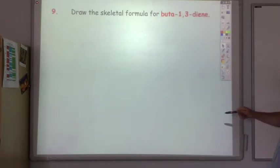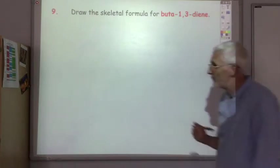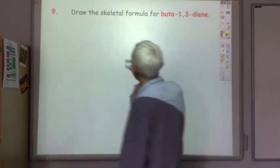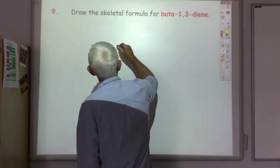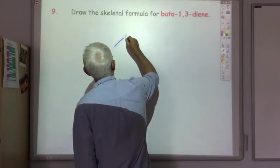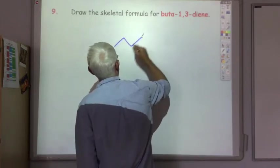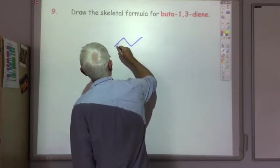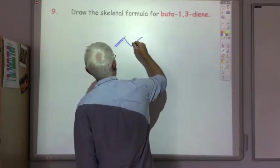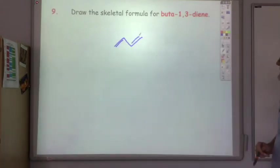Buta-1,3-diene: we've got four carbons and two double bonds — one, two, three, four. There's buta-1,3-diene.